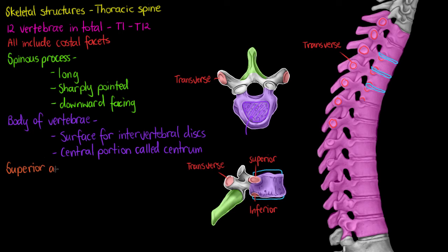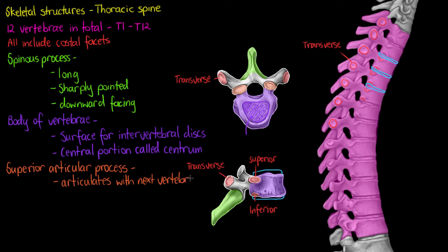Moving on to our next feature: we've got the superior articular process, highlighted here in orange. It's going to be the point on our spine where we articulate with the vertebra directly above us — so it articulates with the next vertebra in the column. We'll also have articular processes on the bottom, so we'll have an inferior articular process as well, which is underneath the vertebra.